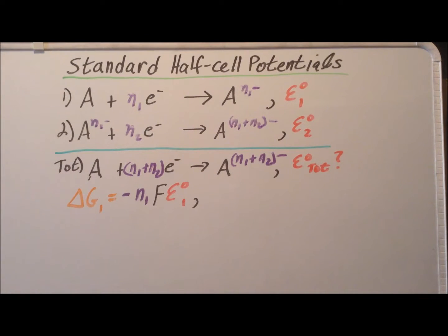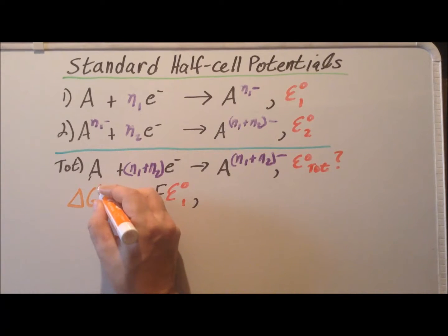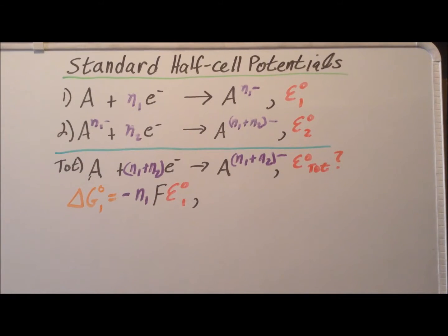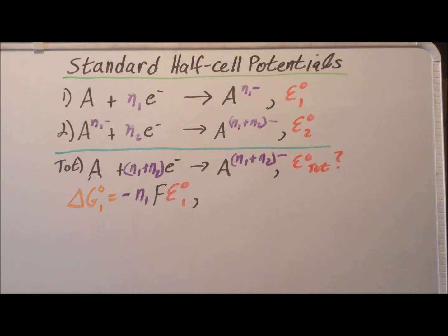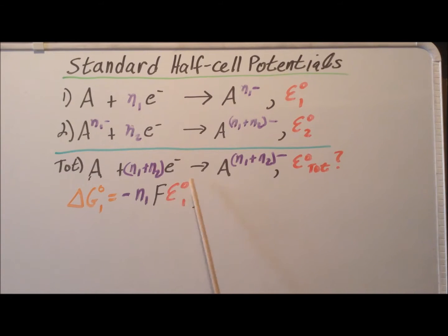A very useful relationship between the standard reduction potential and the Gibbs free energy for a half-cell reaction is that delta G naught — the standard Gibbs free energy — is equal to minus the number of electrons transferred times the Faraday constant times the standard reduction potential. In the specific case of the first reaction, delta G naught sub 1 is equal to minus N sub 1 times F times E naught sub 1.